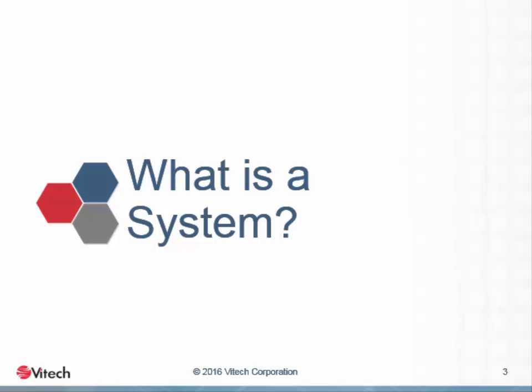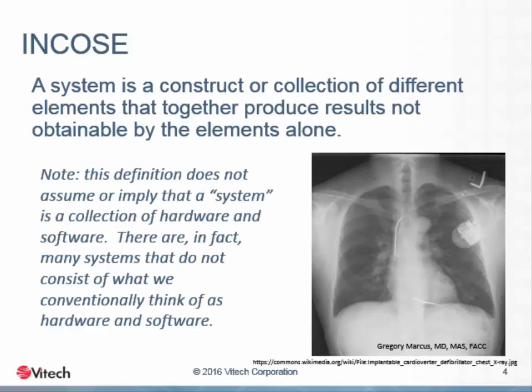Our study of model-based systems engineering must begin with the question: what is a system? The object of any kind of systems engineering is, of course, systems. The International Council on Systems Engineering defines a system as a construct or collection of different elements that together produce results not obtainable by the elements alone. It is important to note that systems can be composed of more than hardware and software.